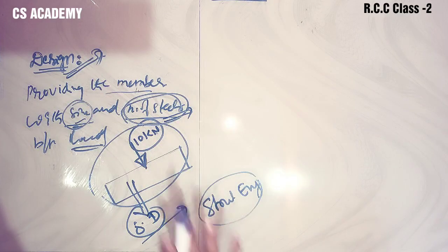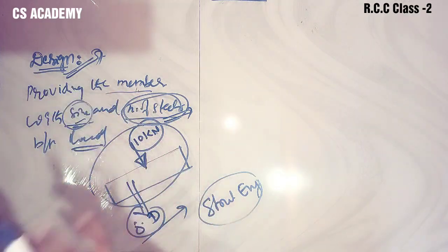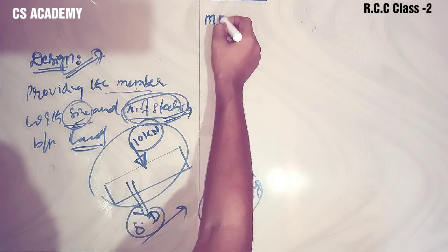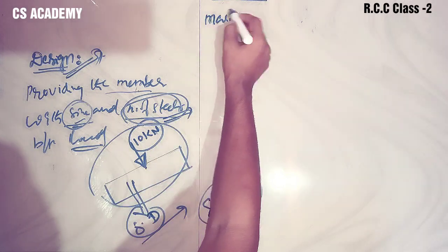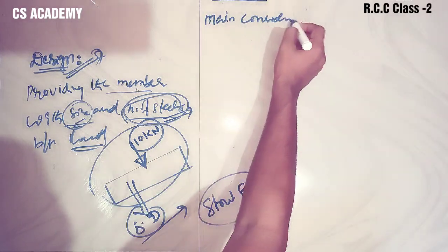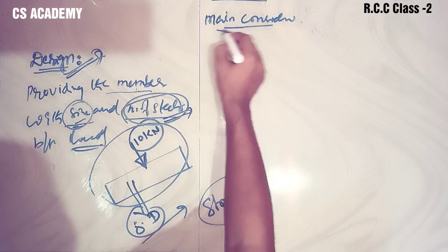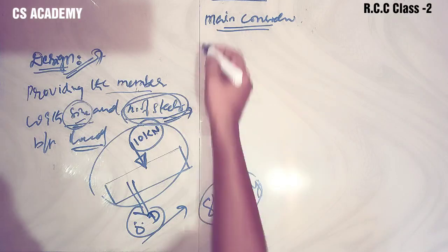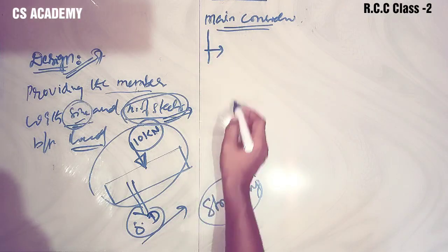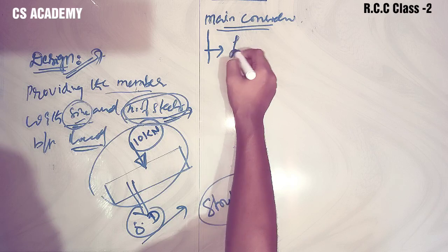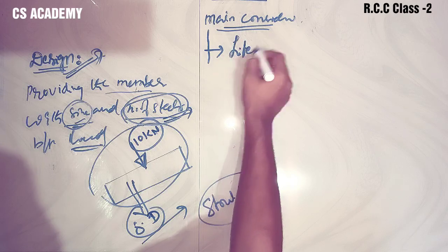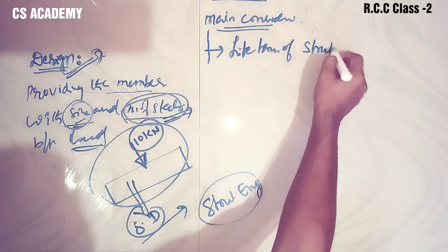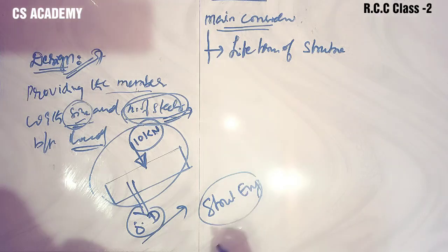What is the meaning of the design of a structural member? What should we consider? The first point is the lifetime of the structure. For example, a dam is constructed with a life of, say, 100 years - it has to sustain all the loads during that lifetime.